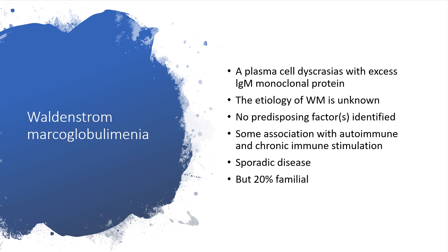Waldenström's macroglobulinemia is a plasma cell dyscrasia where we have excess immunoglobulin IgM. The etiology is unknown — we don't know any predisposing factor or factors. There are some associations with autoimmune conditions and chronic immune stimulation. It is a kind of sporadic disease, but it is familial in about 20 percent of cases.